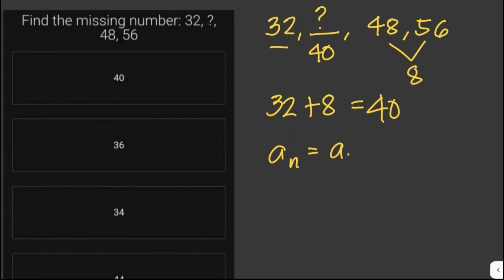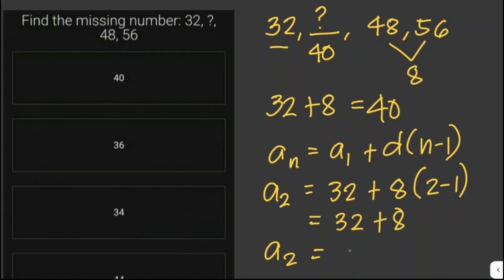Or you can use the formula for the arithmetic sequence: a sub n equals a sub 1 plus d times n minus 1. So our a sub n here is a sub 2. a sub 1 is 32 plus the common difference, 8, then 2 minus 1. This is 32 plus 8. Therefore, the second number is 40. The answer here is this one.